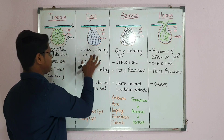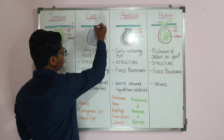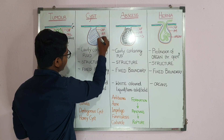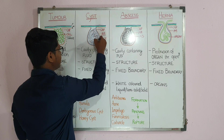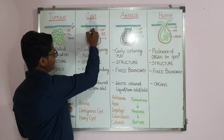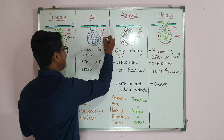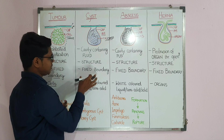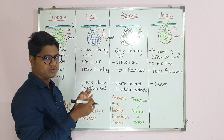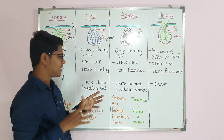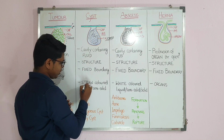Coming to cyst — a cyst is a cavity containing fluid, usually fluid. The structure has an outer capsule, and the blue line represents the secreting membrane. This membrane secretes the fluid; the inner content is basically fluid which is usually exudate. The boundary is usually fixed. It does not grow like a tumor — they are usually fixed in size.